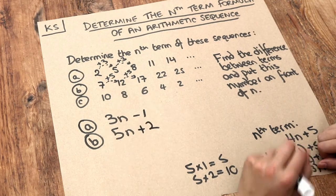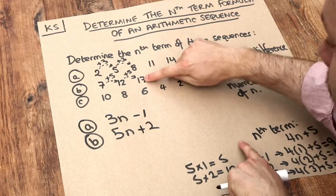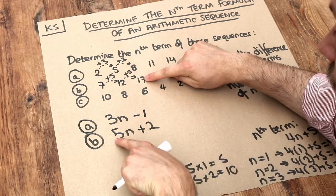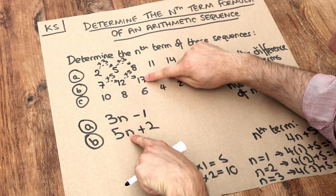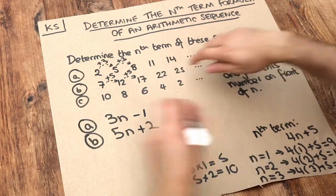Let's just check that for the third term. When n is 3: 5 times 3 is 15, plus 2 is 17. It works.